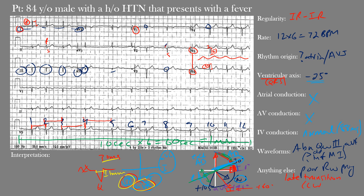One important caveat: R wave progression and the transitional zone are highly dependent on lead placement, so this is not a perfect science. Be aware that these findings are significantly influenced by where the leads are placed.